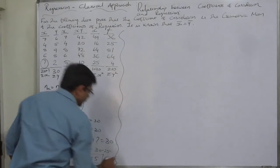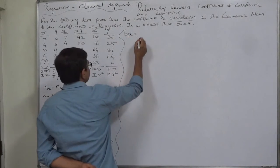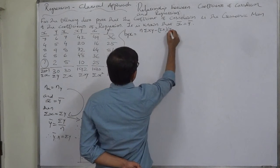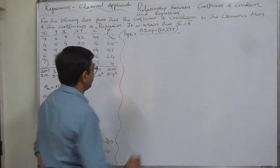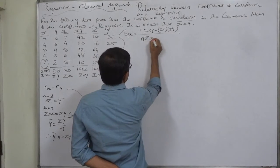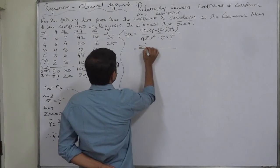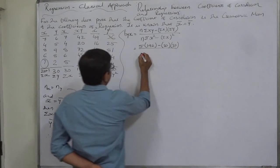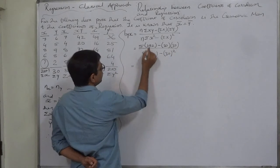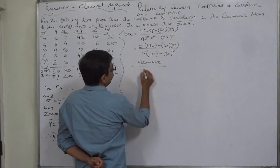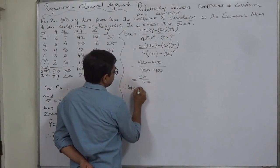Now let us find the two coefficients of regression. The coefficient of regression of y on x is: byx = (n·σxy − σx·σy) / (n·σx² − (σx)²). Substituting: (5×192 − 30×30) / (5×190 − 30²) = (960 − 900) / (950 − 900) = 60/50. So byx = +1.2.